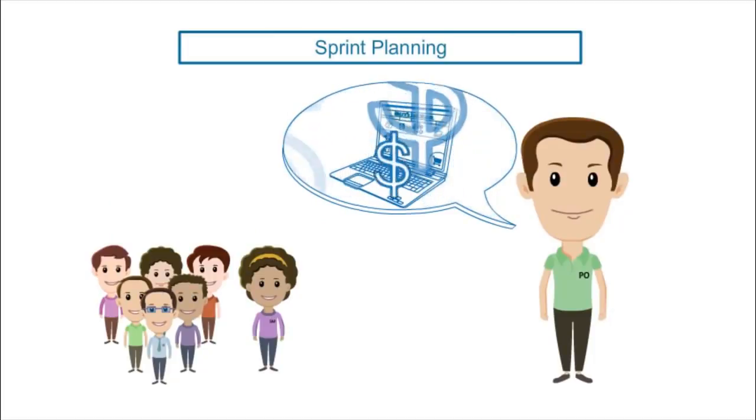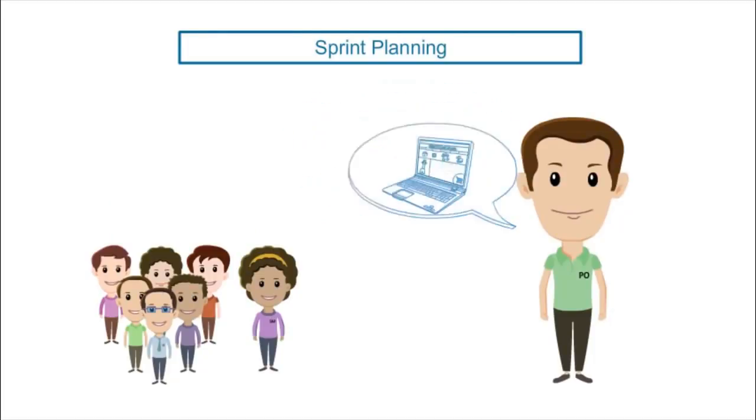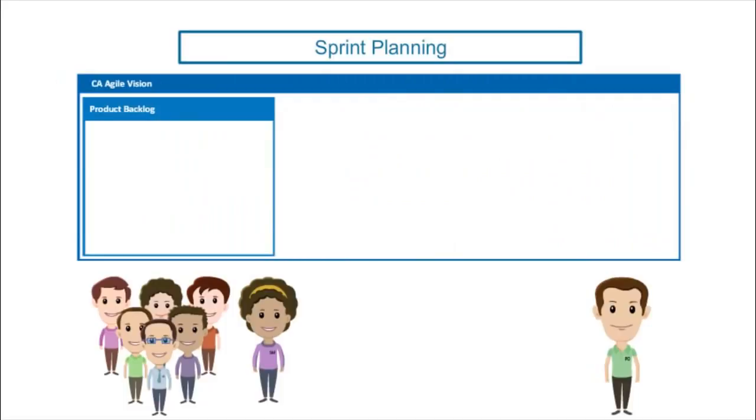Rajesh presents the sprint goals to Tammy and the scrum team. For the first sprint, they focus on getting a basic website open and running so that Mary can start making money as soon as possible. The team reviews the prioritized product backlog and highlights the user stories by asking the product owner for more details about them.